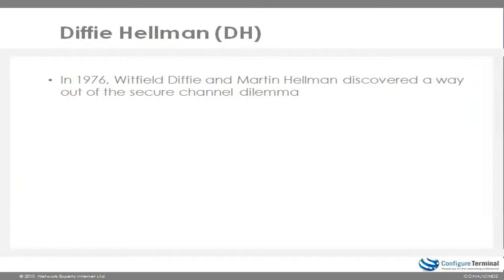In 1976, two gentlemen, Diffie and Hellman, discovered a way out of the secure channel dilemma. In other words, the issue we had with the transmission of a shared secret across an insecure medium can be solved by using Diffie-Hellman.